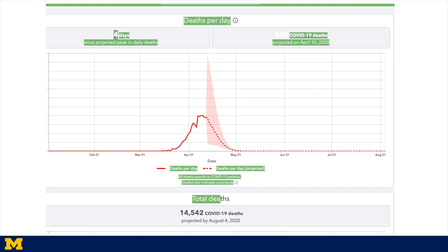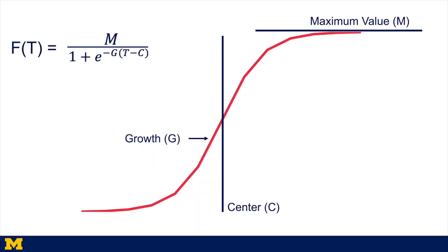What the model does — using data from the state of New York — is take daily data of the number of fatalities and try to fit that curve the best it can. The solid line is the data today, the dotted line is what the model predicts will happen in the future, and the shaded area is the uncertainty about what may happen. Going back to the logistic function: if there are interventions, if people quarantine or we shut down non-essential businesses, that's going to push that curve down.